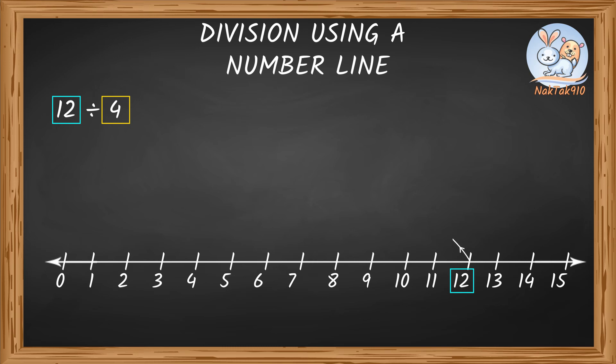So, first skip by 4 from 12 brings us to 8. Second skip by 4 from 8 brings us to 4. Third skip by 4 from 4 brings us to 0.